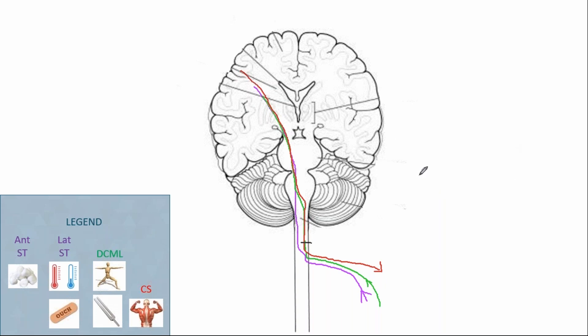So, to start, let's start with those spinothalamic tracts. Again, here you can see how information ipsilateral, so same side of the lesion, is able to come in, ascend the spinal cord, cross over, and that information is able to cross over and be processed. So, ipsilateral pain and temperature is intact.